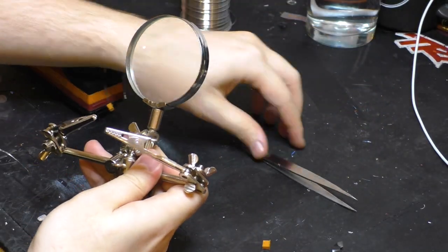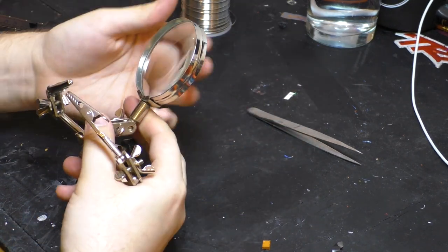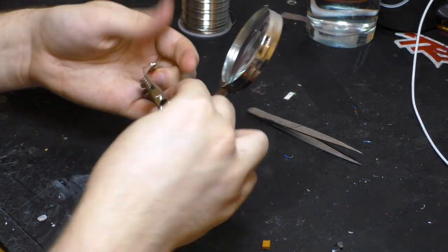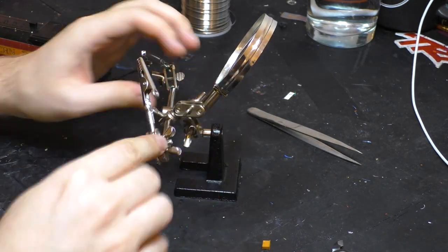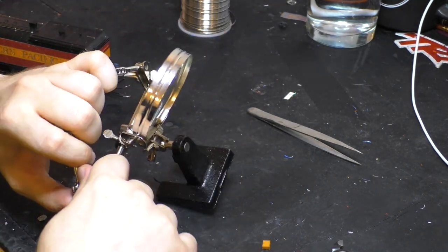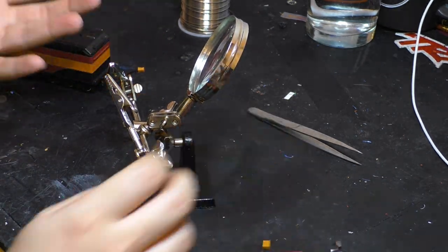Alright now comes the most useful tool of this whole project, the third hand. This one cost me a whopping $20, and it's basically just two alligator clips on some arms that you can reposition. This particular version with the screws and the wing nuts, these always get loose, they always need to be tightened down like crazy, and it needs to be done constantly.